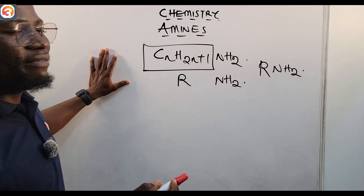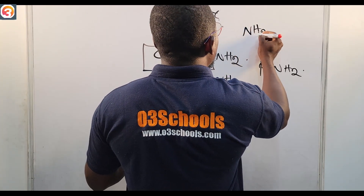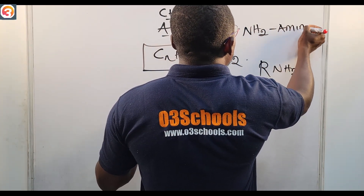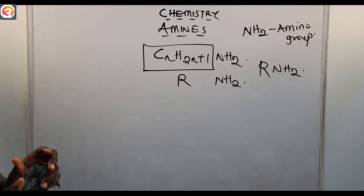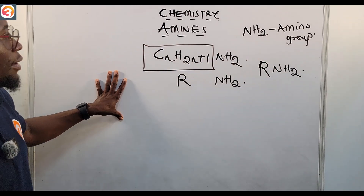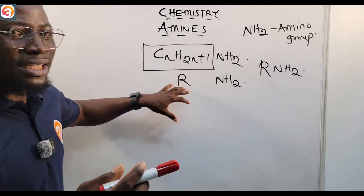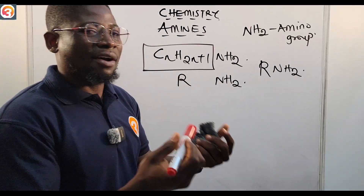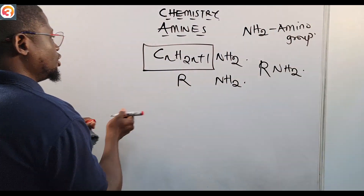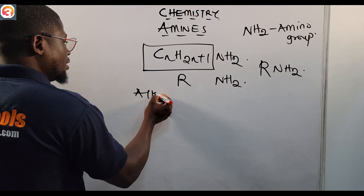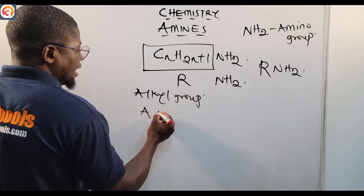Amines are compounds that have the amino group (-NH₂). This amino group is called the amino group. An amine is a compound having the amino group attached to either an alkyl group, a phenyl group, or an aryl group.